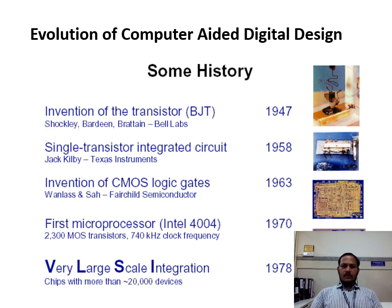In 1947, the first transistor was formed by Shockley, Bardeen, and Brattain at Bell Labs. After that they made a single circuit, then they went for small scale integration, and it became CMOS logic in 1963.